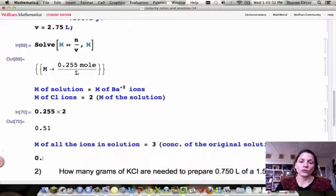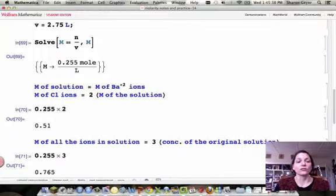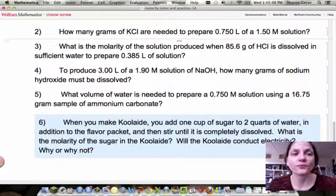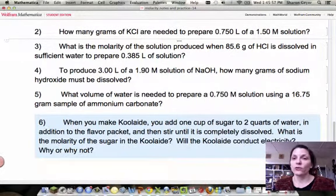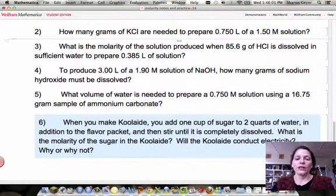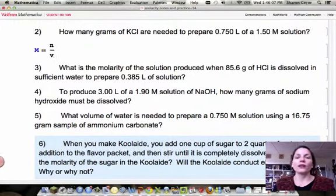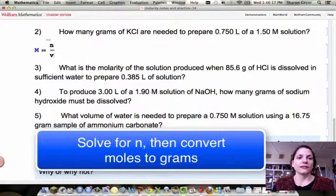So if we do 0.255 times three, that's the concentration of the entire solution, of all the ions in solution. Let's just do one more problem using the molarity equation, and then I'll let you try the others on your own. So the next question here, we know that the volume of the solution, and we know the concentration, and this time we're going to try to solve for grams. Again, we're going to use our molarity equation, but this time we're going to actually solve for the number of moles first, and then do moles to grams as our final step.